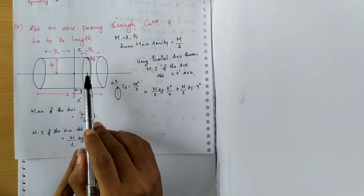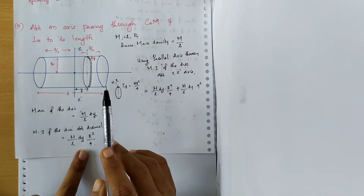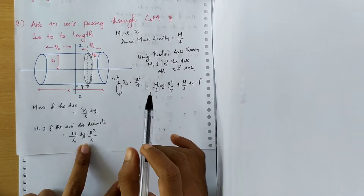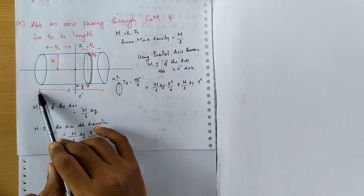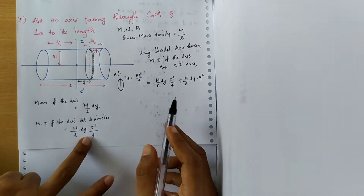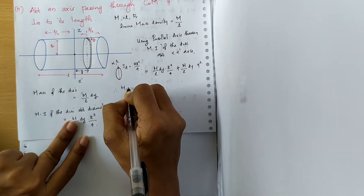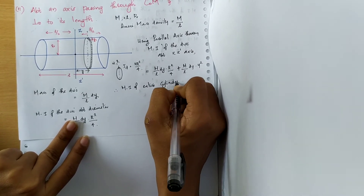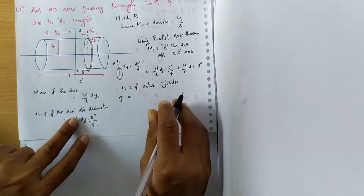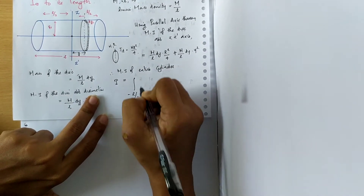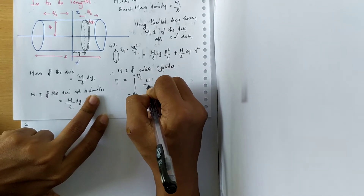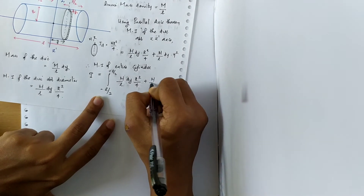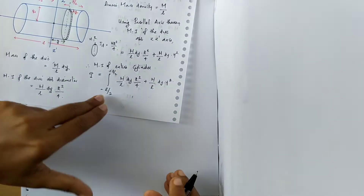We now have the moment of inertia of this disc with respect to ZZ prime. To find the moment of inertia of the entire solid cylinder, we integrate from −L/2 to +L/2, covering the entire length. So the moment of inertia I equals the integral from −L/2 to +L/2 of (M/L · R²/4 + M/L · y²) dy.